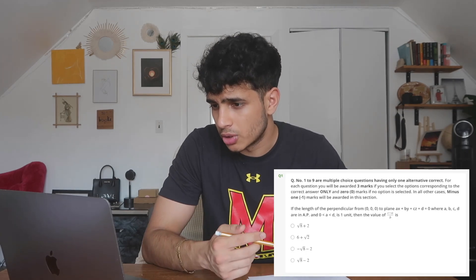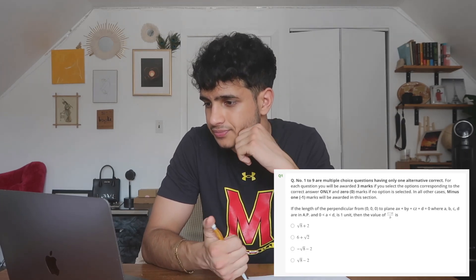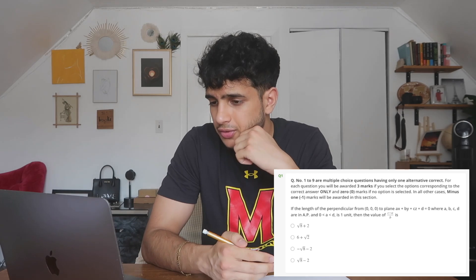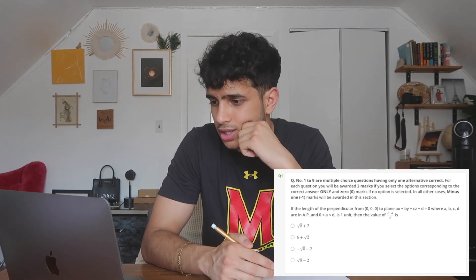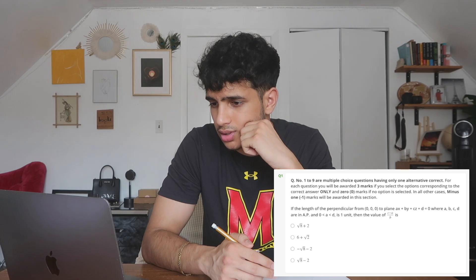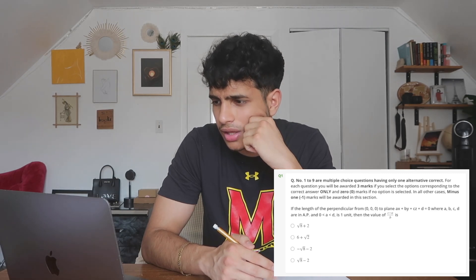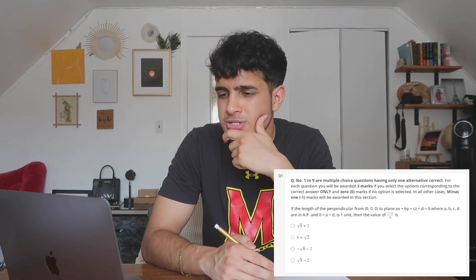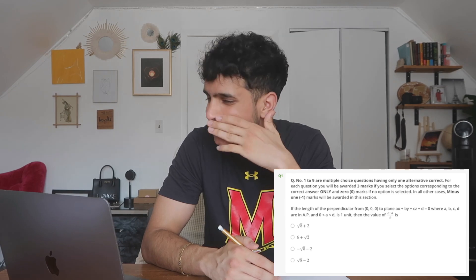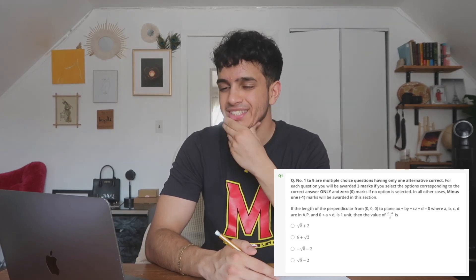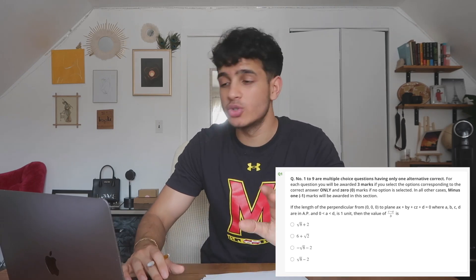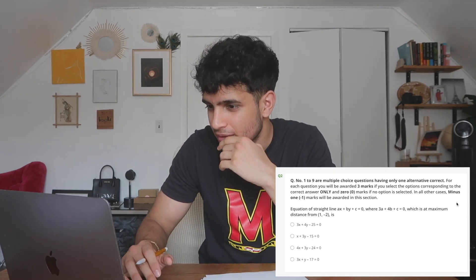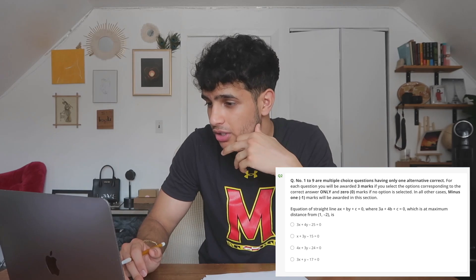Alright, section one — multiple choice questions. The first question asks for the length of the perpendicular from (0,0,0) to the plane AX + BY + CZ + D = 0. Oh buddy. Let's do question two — same thing almost. Question three: radius of a circle. X squared plus Y squared equals 16, so radius is 4, center is (0,0). It asks for the angle between the direct common tangents.